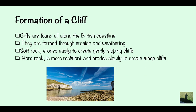Formation of a cliff. Cliffs are found all along the British coastline and are formed through erosion and weathering. Soft rock is eroded easily and creates gently sloping cliffs, whereas harder rock is more resistant and erodes slowly to create steep cliffs — as seen here, this is obviously hard rock as the cliff is very steep.